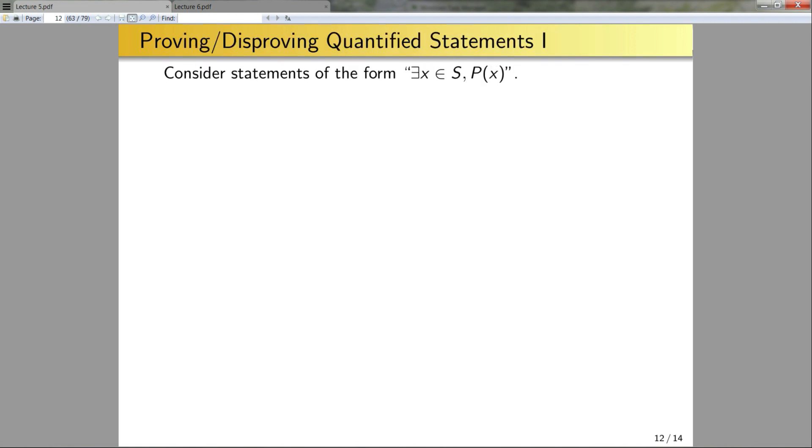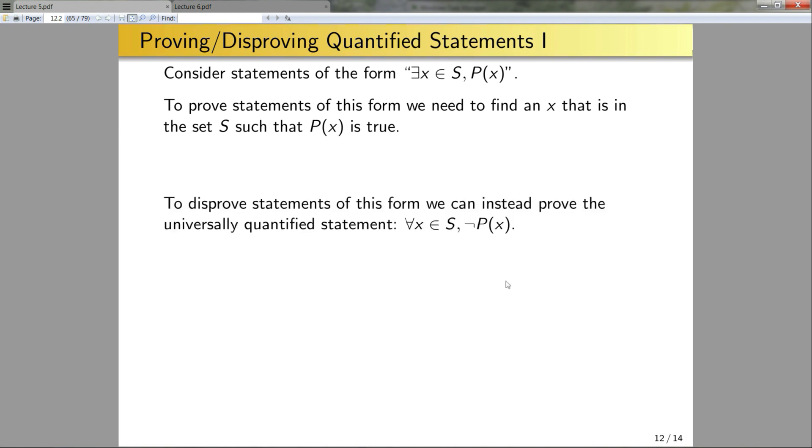So now that we've gone through several methods of proving statements, let's re-examine proving and disproving quantified statements just to make things a bit more concrete and to explicitly state some facts that have been implicitly using here and there throughout the last two lectures. So consider the statement of the form, there exists an x in s such that p of x. If I want to prove a statement of this form, all I have to do is find a value of x that is in the set s such that p of x is true. To do this, you can use something like proof by construction. To disprove statements of this form, I can instead prove this universally quantified statement for all x in s, not p of x. So where did this come from? Why does this work? Well, I know that the original statement there exists an x in s such that p of x is false precisely when its negation is true. And I know that the negation of this quantified statement is simply for all x in s, not p of x.